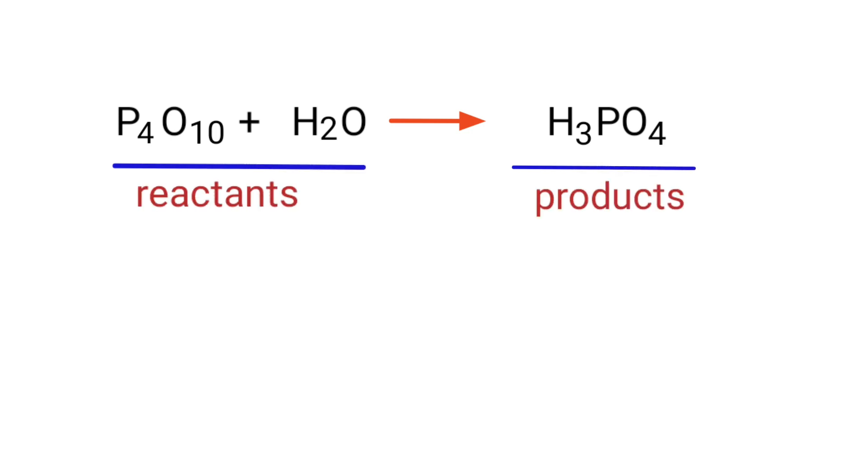In this equation, the reactants are tetraphosphorus decoxide and water, and the product is phosphoric acid.